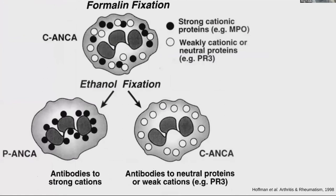Now let's move on to ANCA testing. The first thing we often think about is immunofluorescence, where we fix the neutrophils. Neutrophils can be fixed in formalin, where the neutrophil granules containing MPO or PR3 can be seen in the cytoplasm, with the nucleus separate. Nuclear staining on formalin fixation is often ANA positive.